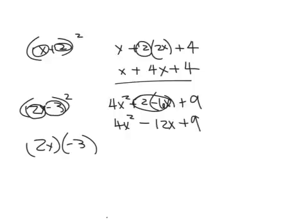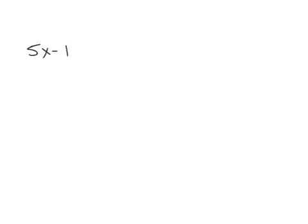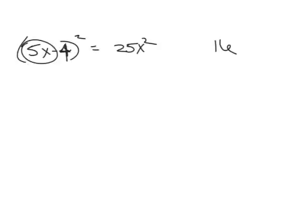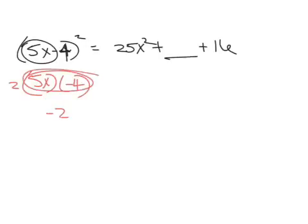Example 7: 5x minus 4, squared. Square the first term: 25x squared. Square the second term: 16. For the middle term, take 5x times negative 4 to get negative 20x, then multiply by 2 to get negative 40x. So the answer is 25x squared minus 40x plus 16.